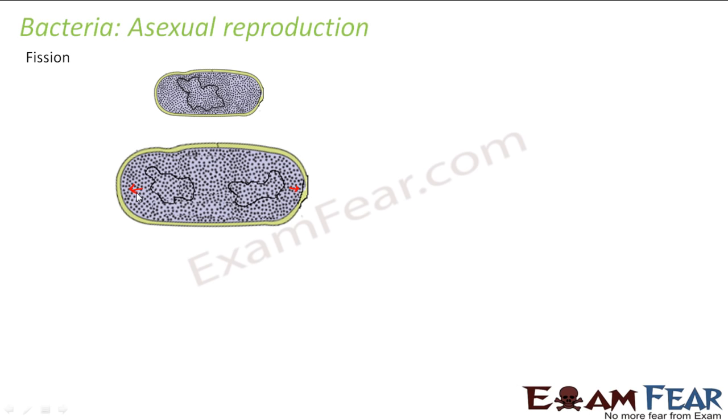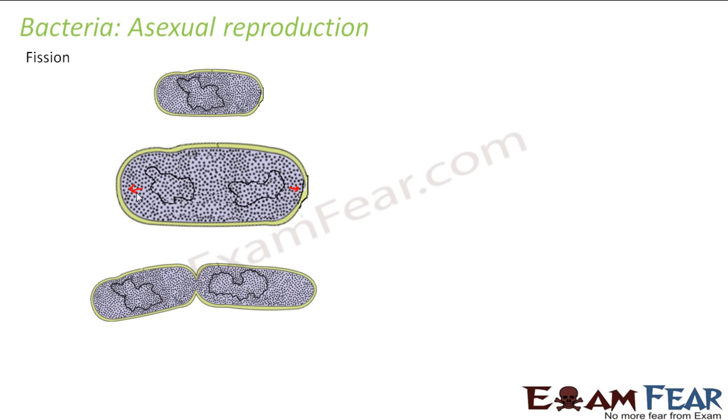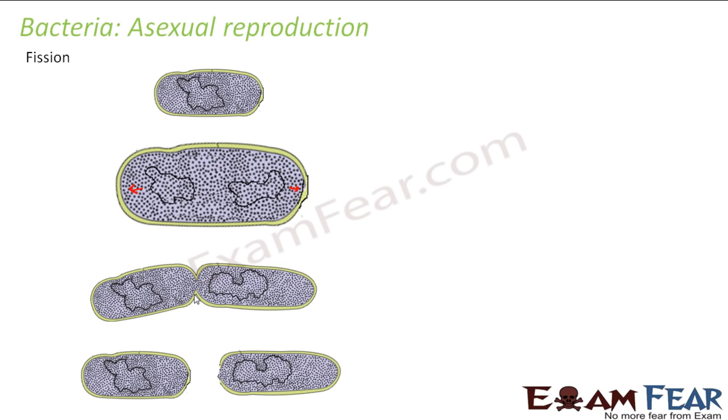Once they have moved too far from each other, a wall is formed in the middle between them. Then finally it divides into two. We started with one parent organism and this resulted in two daughter organisms. Once fission happens, the parent ceases to exist. This is known as binary fission because two daughter organisms are produced.